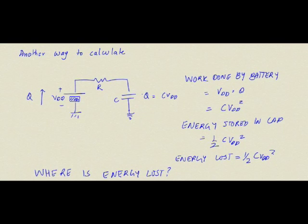The energy is lost primarily as heat, and possibly a small amount as radiation (such as in radio circuits with Wi-Fi). It is also possible to charge a capacitor to voltage V without losing energy as heat, by slowly ramping the battery voltage from 0 to VDD rather than applying a fixed voltage. The energy stored remains ½CV²DD, but the energy lost in charging can be greatly reduced by slowing the ramp rate.